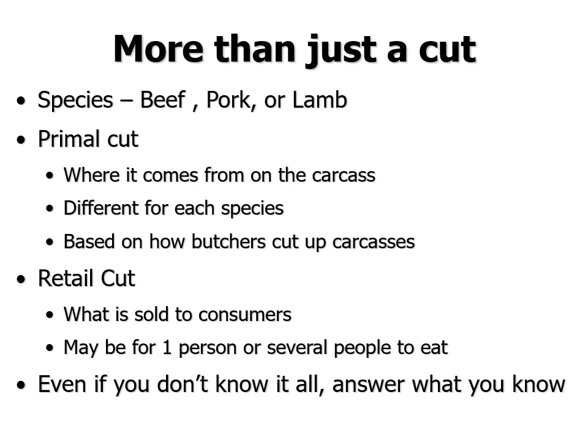The thing about primal cuts is this goes back to the way meat is actually cut up by a butcher. Different species are cut up different ways, and the different parts have different names. What we call a round in beef is going to be called a ham in pork, and they're cut at a little bit different places, so they're different for each species.